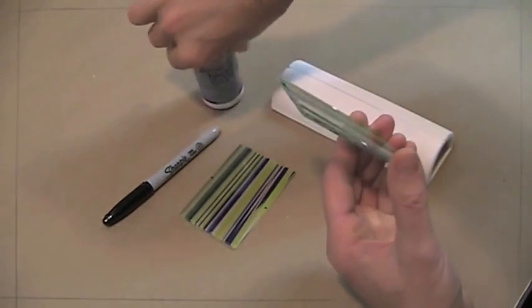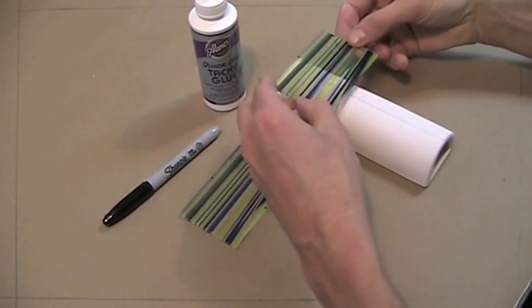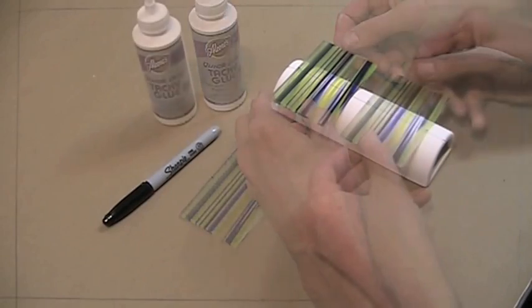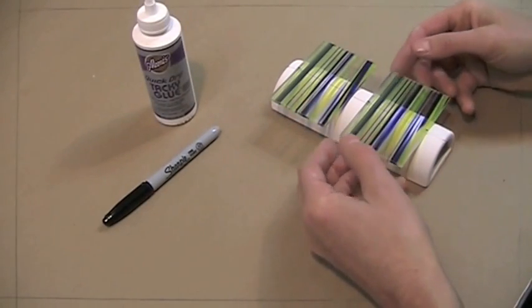Line up the marks on the glass panels with the marker lines drawn on the former. This will ensure that the slump panels align perfectly in the finished piece.